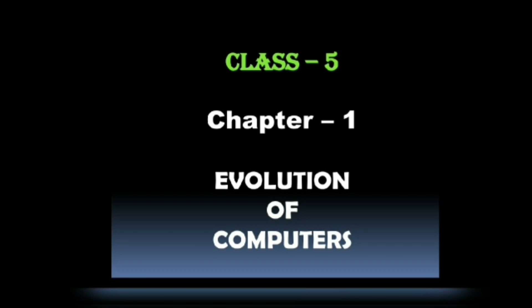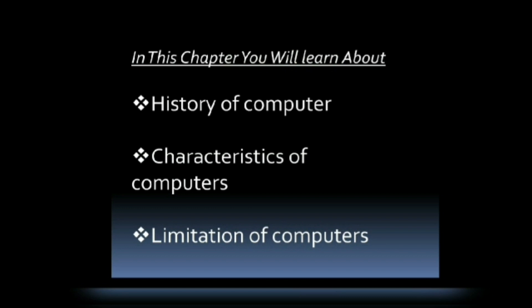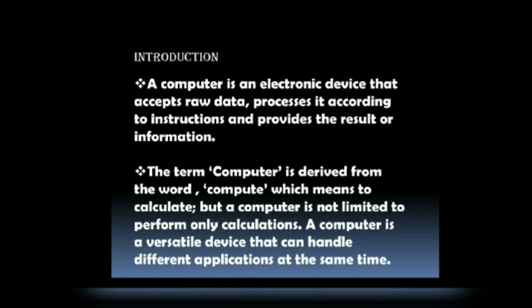Chapter 1: Evolution of Computers. In this chapter, you will learn about the History of Computers, Characteristics of Computers, and Limitations of Computers. Today we will only discuss the History of Computers. A computer is an electronic device that accepts raw data, processes it according to instructions, and provides the result or information. The term computer is derived from the word 'compute', which means to calculate, but a computer is not limited to only calculations. It is a versatile device that can handle different applications at the same time.